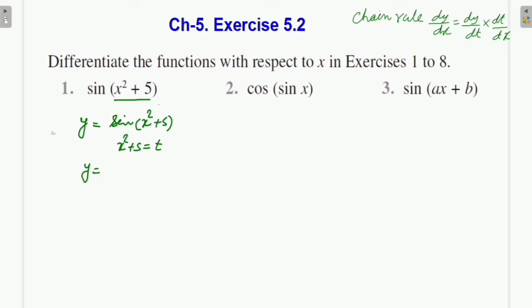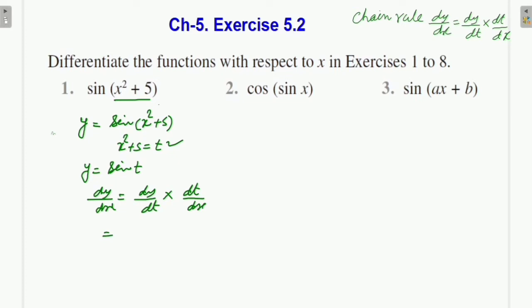So now the value of y becomes sin t. We write the chain rule formula: dy/dx = dy/dt. Since y is now a function of t, we write dy/dt, and t is a function of x, so we write dt/dx. We substitute the value: d/dt of sin t × d/dx of (x² + 5).